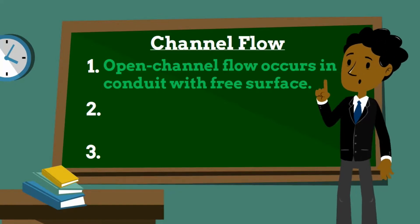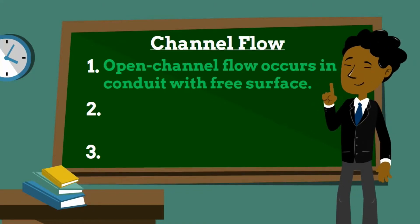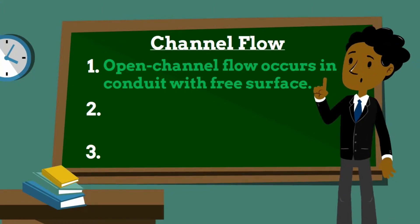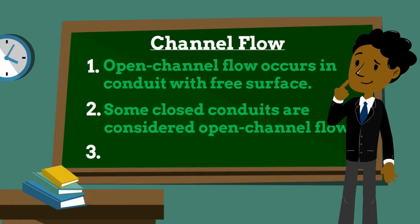Pipe flow, being confined within the closed conduit, does not exert direct atmospheric pressure but does exert hydraulic pressure on the conduit. Not all flow within a closed conduit is considered pipe flow. Storm sewers are closed conduits but usually maintain a free surface and therefore are considered open channel flow. The exception is when a storm sewer operates at full capacity and becomes pipe flow, but closed channel flows are generally governed by the principles of channel flow as the liquid possesses a free surface inside the conduit.